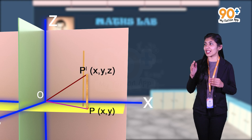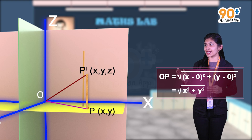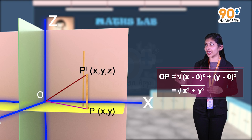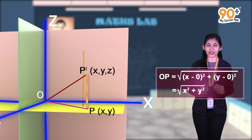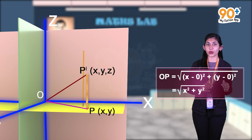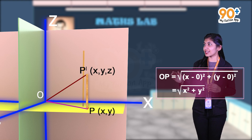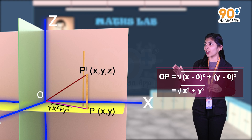The length of the line OP is equal to the square root of (x minus 0) squared plus (y minus 0) squared, which equals the square root of x squared plus y squared. That is, the distance from O to P is the square root of x squared plus y squared.